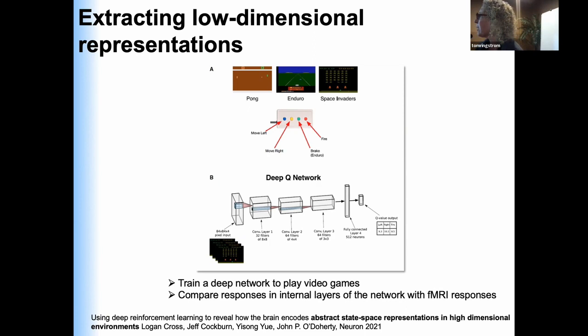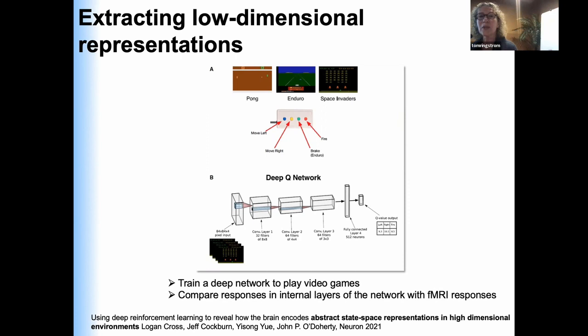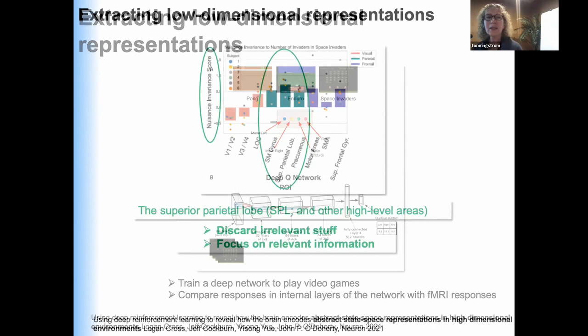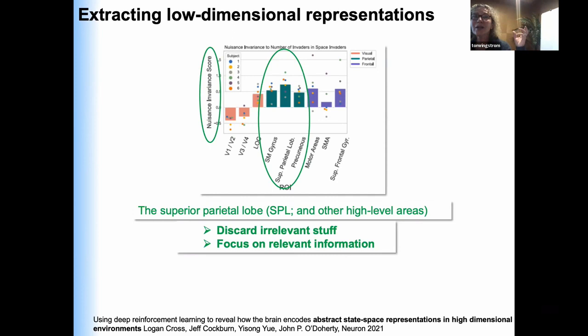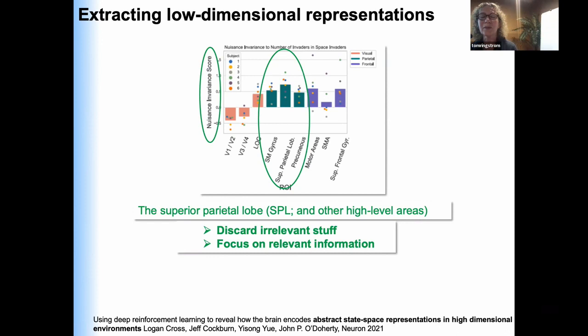This is one example from a recent study from John O'Doherty's lab in which they use deep learning. They trained a deep network on a set of standard video games, and then they compared the internal representations that developed in these networks with fMRI recordings from the human brain in the same kind of games. The finding I want to highlight is that they extracted a measure called nuisance invariance — the extent to which an internal representation is invariant to irrelevant visual stimuli not relevant to the immediate goals.